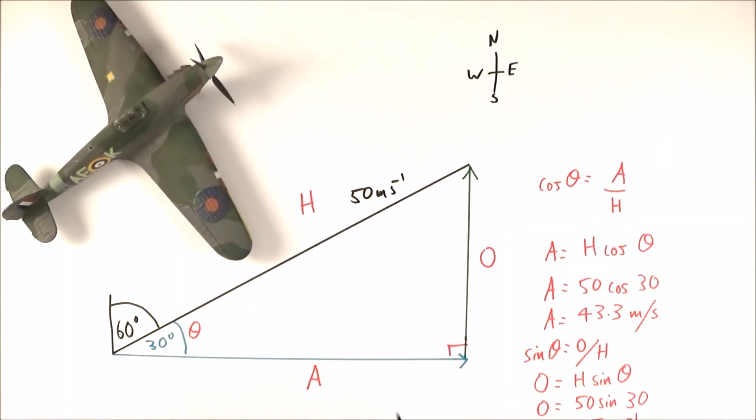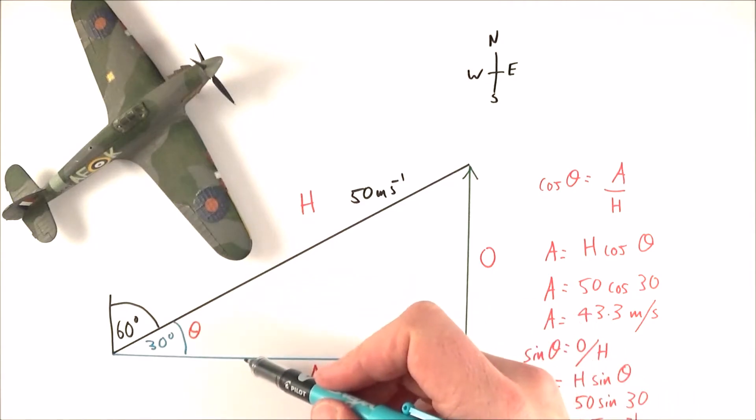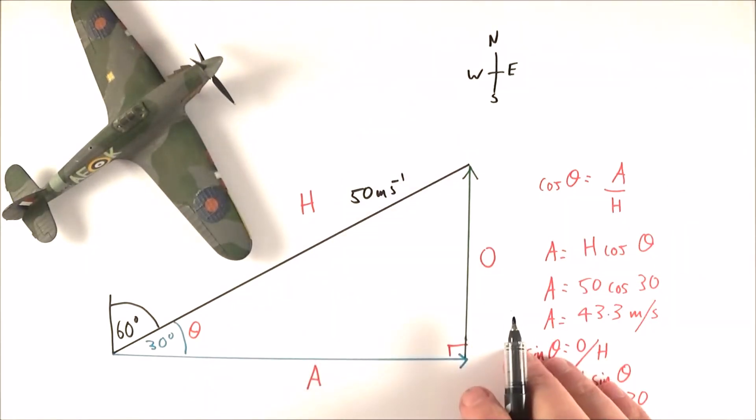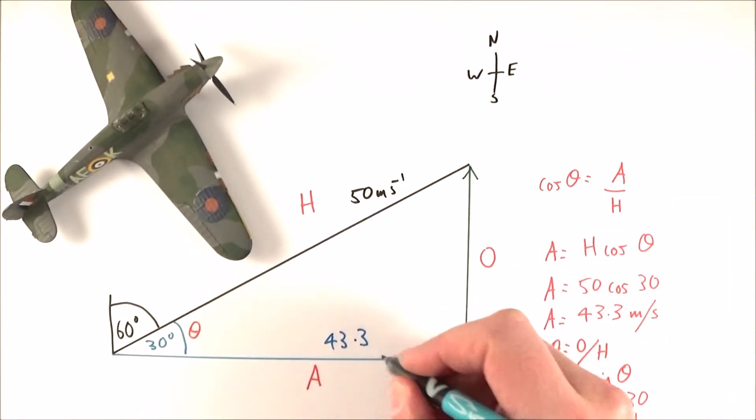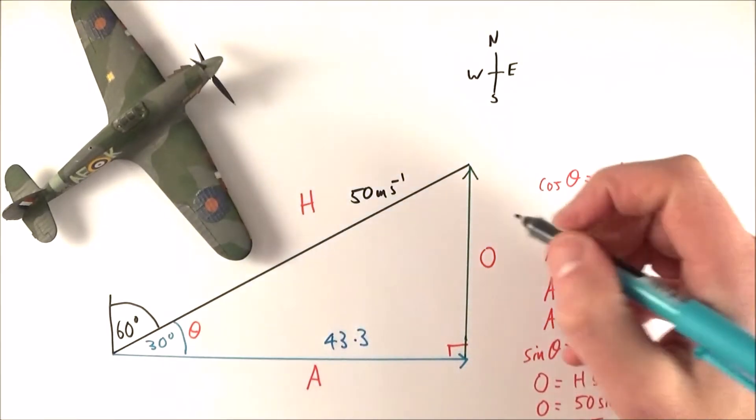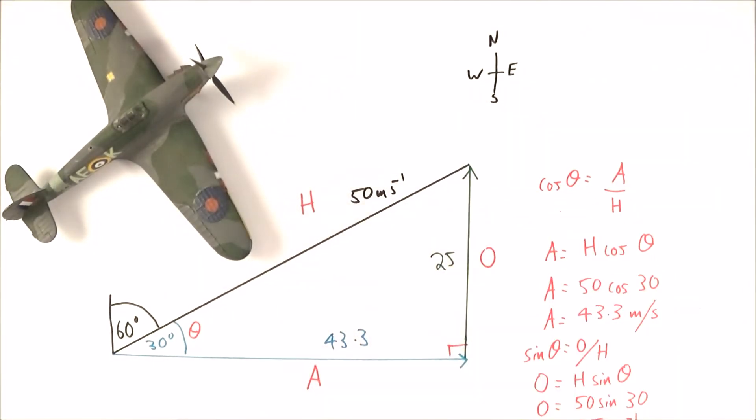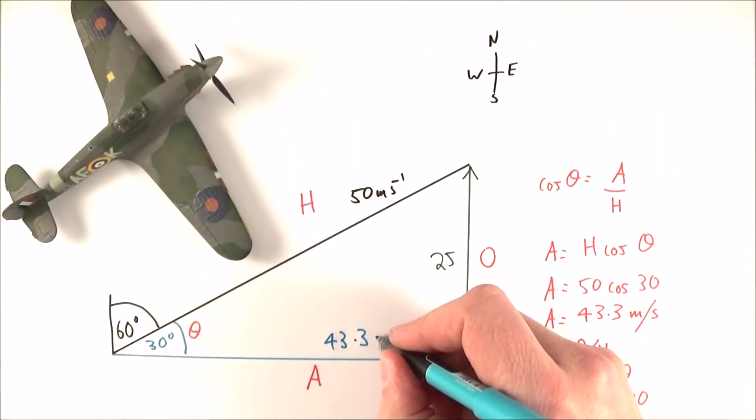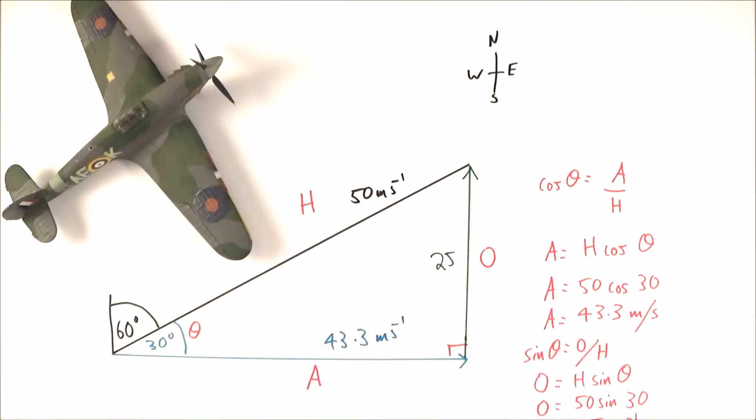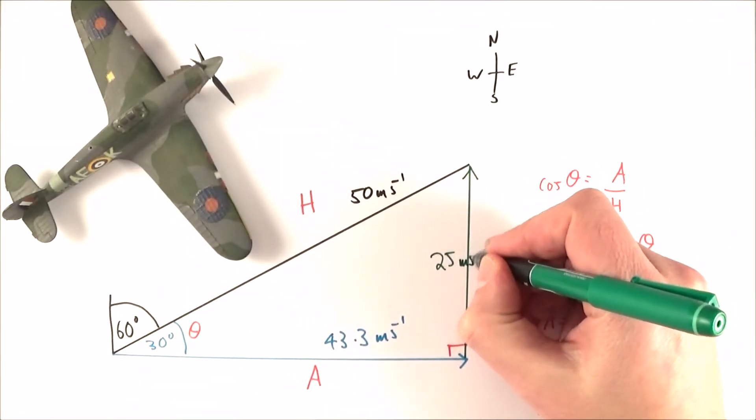Summing that up, although it's got a velocity of 50 metres per second, I've resolved it into its easterly and northerly components. Every second that plane goes 50 metres, but it goes a further 43.3 metres east and it goes another 25 metres north. And that means its horizontal velocity is 43.3 metres per second. Sorry, its easterly velocity, and its northerly velocity is 25 metres per second.